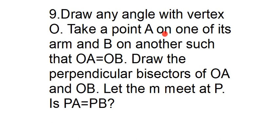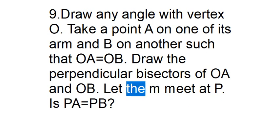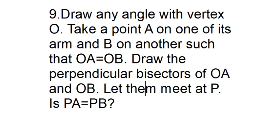The question is: draw any angle with vertex O, take a point A on one of its arms and B on another such that OA is equal to OB. Draw the perpendicular bisectors of OA and OB, and let them meet at P. The question asks: is PA equal to PB?